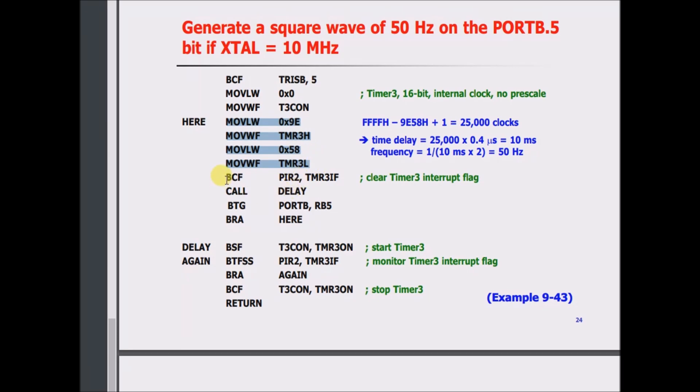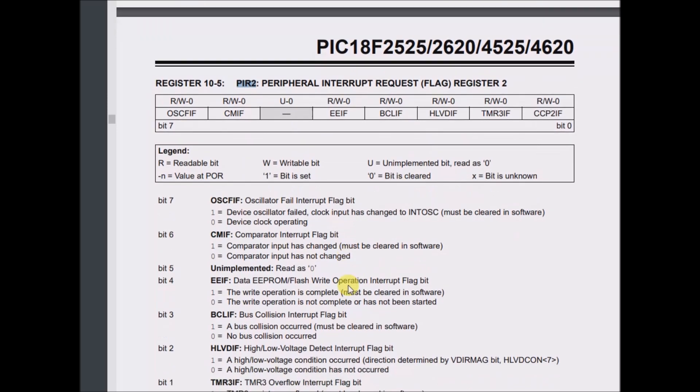And then there's this bit clear F, PIR2, TMR3IF, clear timer 3 interrupt flag. So here is the register within my data sheet for the 4525, PIR2, peripheral interrupt request flag register 2.